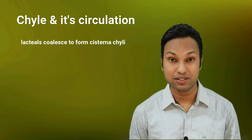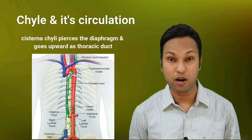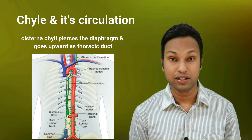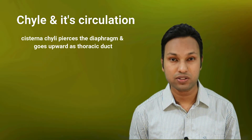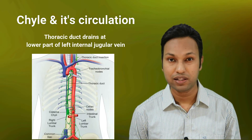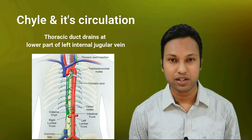The lacteals containing chyle coalesce to form the cisterna chyle. The cisterna chyle then passes through the diaphragm and goes upward in the thoracic cavity behind the esophagus. In the neck, it crosses between the internal jugular vein and the scalene muscle, then drains at the junction of the left internal jugular vein and left subclavian vein, or directly into the left internal jugular vein.